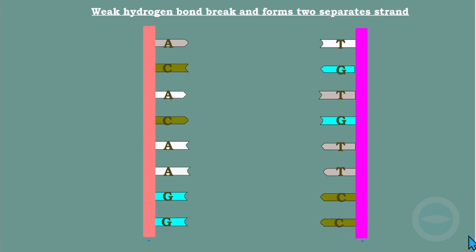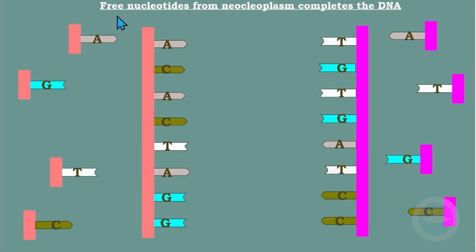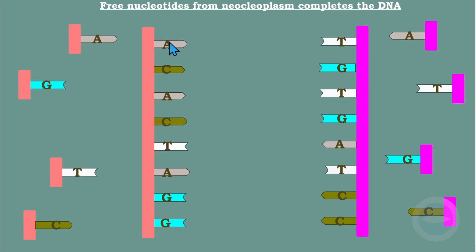The next step: free nucleotides from the nucleoplasm complete the DNA. This process happens inside the nucleus. In the nucleus, free DNA nucleotides are moving around, ready for DNA replication. If a nucleotide on the template strand is adenine, adenine pairs with thymine. The flowing free nucleotides must pair with the template to complete the strand.